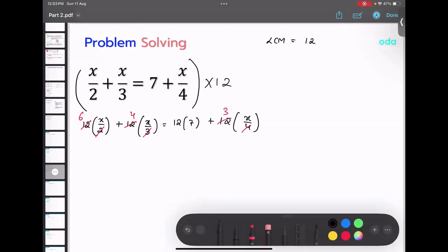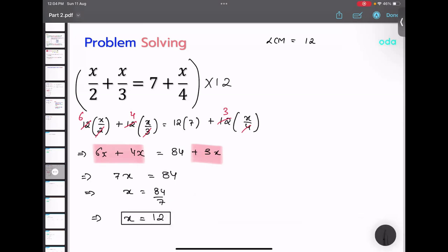Now in the next line, what I am going to do, just rewrite this thing. 6x plus 4x equals to 84 plus 3x. Can you see the amount of working is reduced? Now what I am going to do? I am going to add this thing and subtract this thing. Why subtract? Because if I shift to the other side, it will subtract. So 6 plus 4 is 10 minus 3 is 7x equals to 84. So x equals to 84 upon 7. x equals to 12.